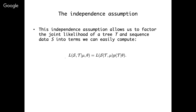In phylogenetics, we want to compute the joint likelihood of both a phylogenetic tree T and the sequence data S observed at the tips. If we make this independence assumption, we can factor this joint likelihood into two simpler terms. We can factor it into a likelihood of the sequence data given the tree — computed using the Felsenstein pruning algorithm — and the likelihood or prior probability of the tree given some demographic parameters, computed for example under a coalescent model or a birth-death model.